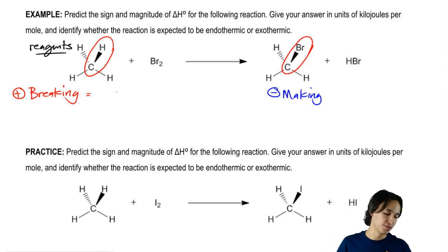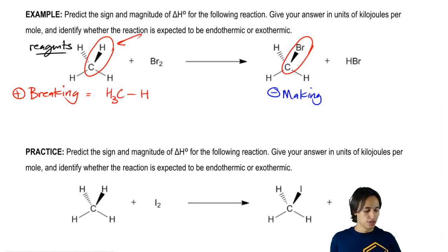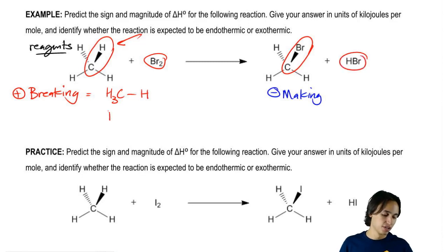So now all I have to do is identify these bonds. One of them I know already is going to be C-H. I know that bond is getting broken because it used to be there and now it isn't. Another one that has to get broken is Br2 because Br2 is turning into HBr. So this is going to be Br-Br. That's another one that's going to require energy to break.